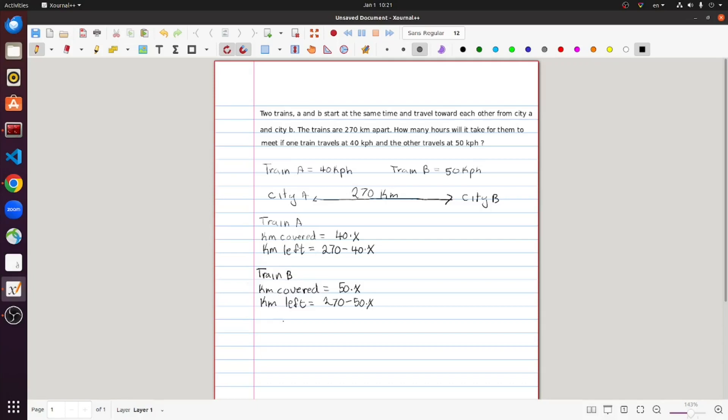Basically, if we wrote that down in math, it would just be 40 times x is equal to 270 minus 50x, right? This is how much train B has left to cover, and this is how much train A must have covered.